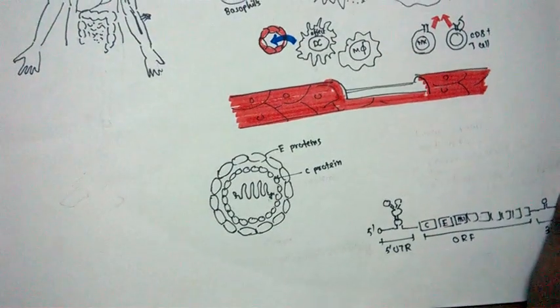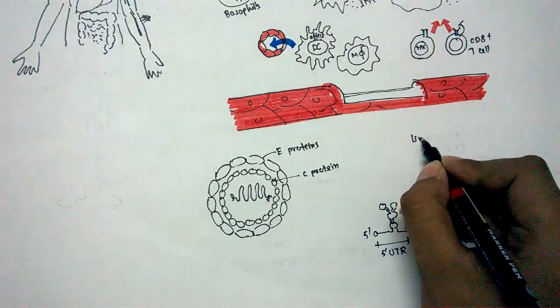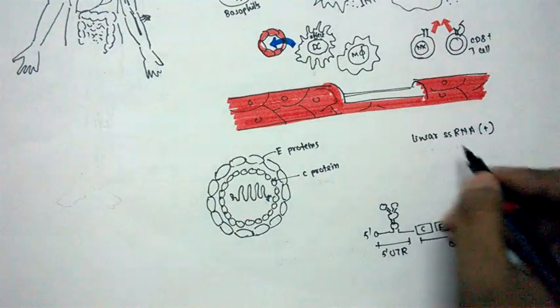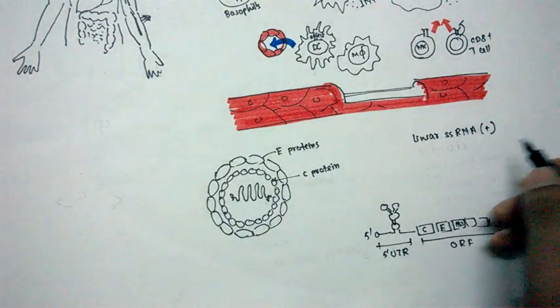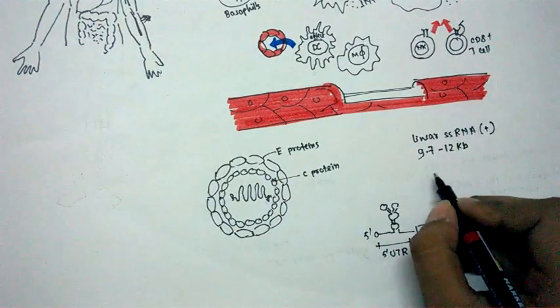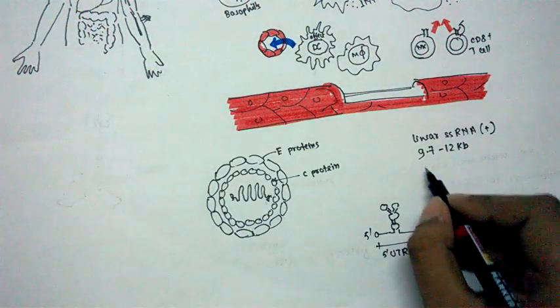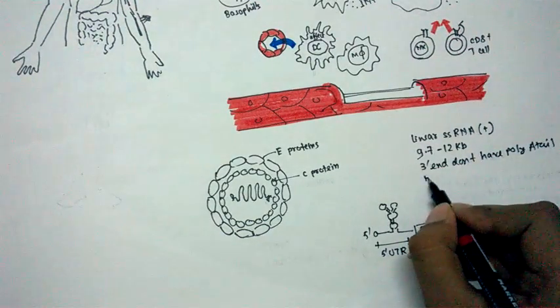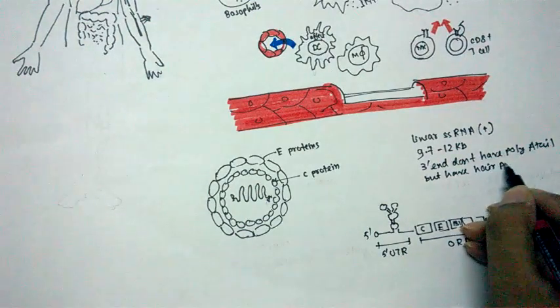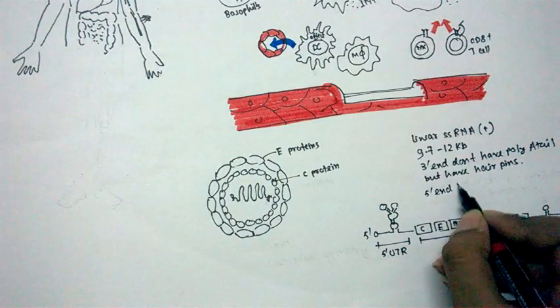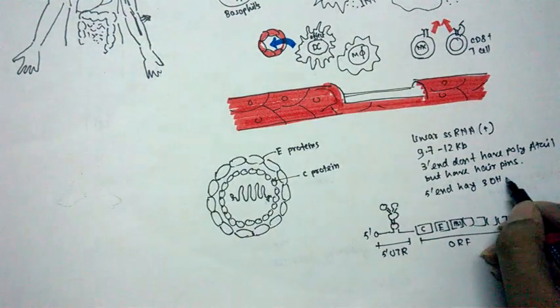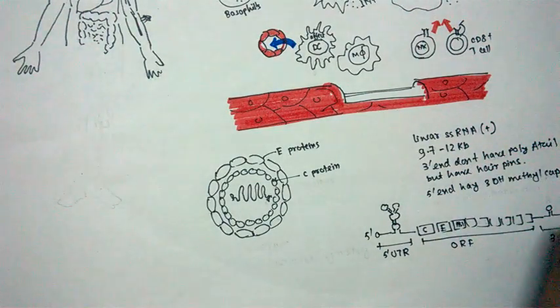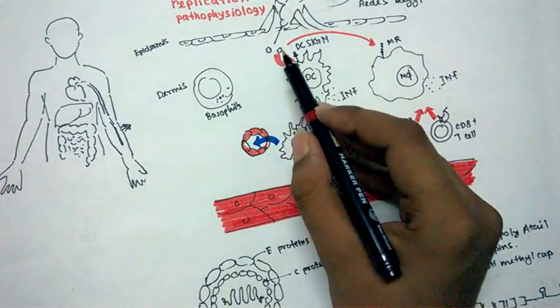Three prime region, it has a lot of hairpins. This is three prime, so this is five prime, so this is three prime UTR, it has a lot of hairpins. So just a general, just to recapitulate what is the genomic features of this virus. It has a linear ssRNA genome and definitely that is plus sense. That means this RNA what I have drawn here could be directly used by the cell to produce protein structural proteins.